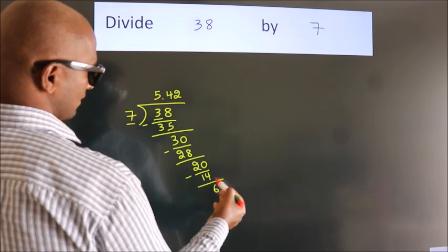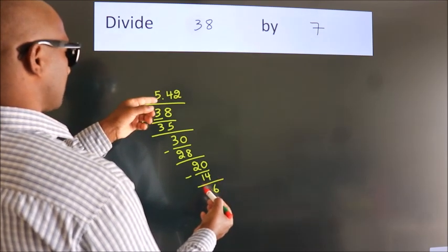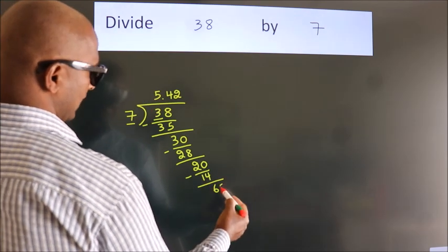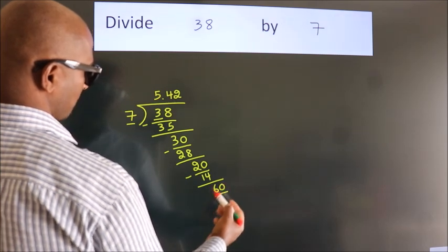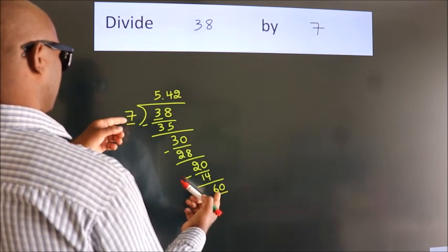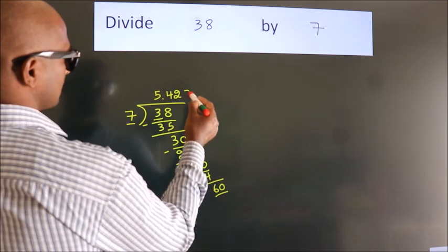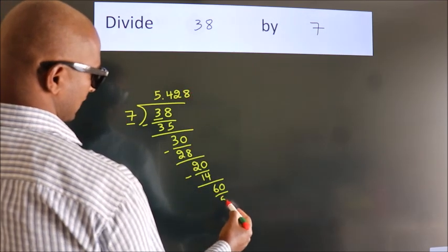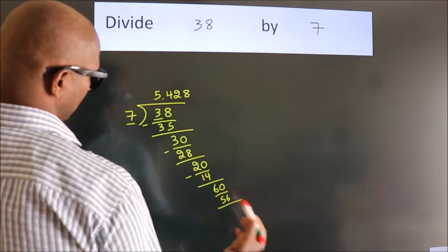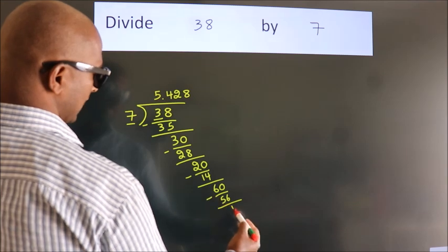After this, we already have the decimal, so directly take 0. So 60. A number close to 60 in the 7 table is 7 eights, 56. Now we subtract. We get 4.